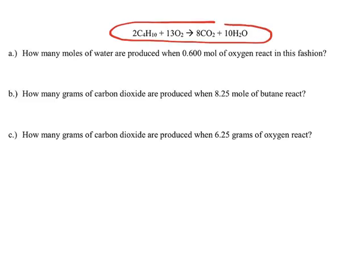a chemical reaction relates the mole ratios of each substance. So if I look at the reaction above, for every two moles of C4H10, I would need 13 moles of O2 to react, and it would produce 8 moles of carbon dioxide and 10 moles of H2O. These numbers represent either mole ratios or molecule ratios.